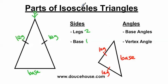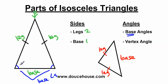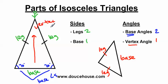From sides, now we're moving to angles. We have base angles and we have a vertex angle. Base angles are the angles at opposite ends of the base, and base angles are always congruent to each other. For example, if one base angle is 70 degrees, then the other is also 70 degrees. You'll always have two base angles. The vertex angle — there's only one — is the angle opposite the base. The vertex angle and the base are always opposite of each other.